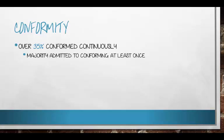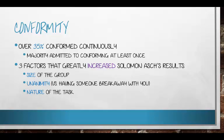Asch did this experiment several ways and found three variables that greatly increased the chance subjects would conform. First, group size — the more people saying the wrong answer, the more likely you'd conform. Second, unanimity — if at least one other student gave the correct answer, you would not conform, because someone had your back. But if everyone said the wrong answer and you were alone in your choice, you were much more likely to conform. Third, the nature of the task — if instructions weren't clearly explained, you'd tend to go with what the group says.